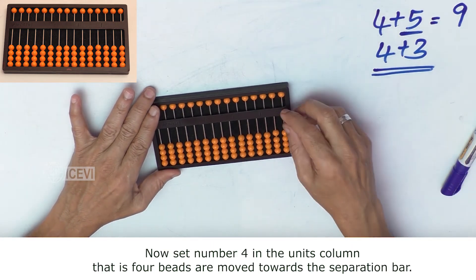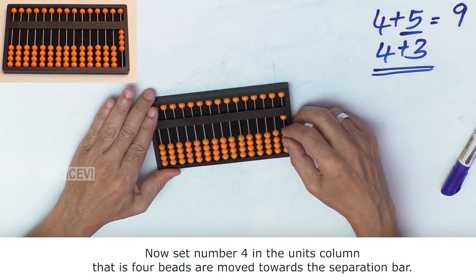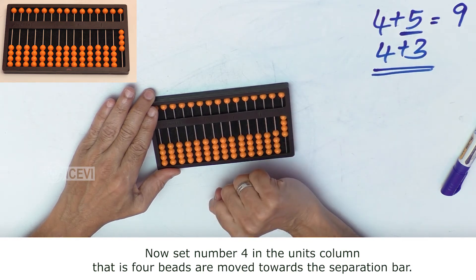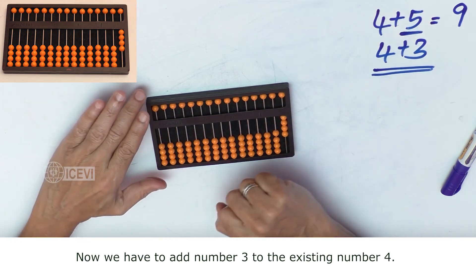Now set the number 4 in the units column. That is, 4 beads are moved towards the separation bar. Now we have to add 3 to the existing number.